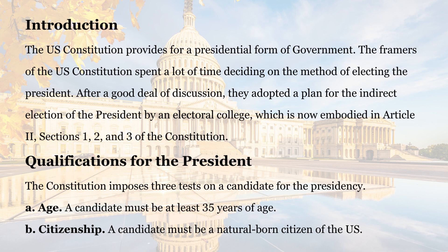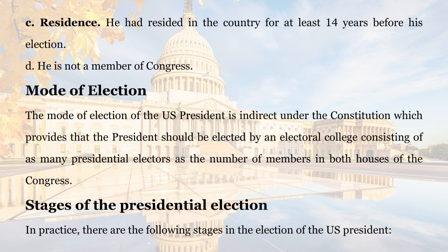Qualifications for the President. The Constitution imposes three tests on a candidate for the presidency. A. Age: a candidate must be at least 35 years of age. B. Citizenship: a candidate must be a natural-born citizen of the U.S. C. Residency: he must have resided in the country for at least 14 years before his election.